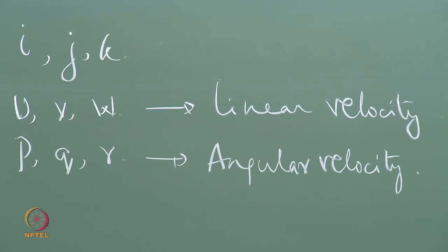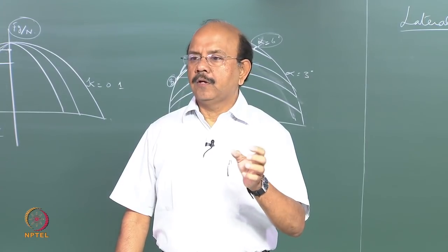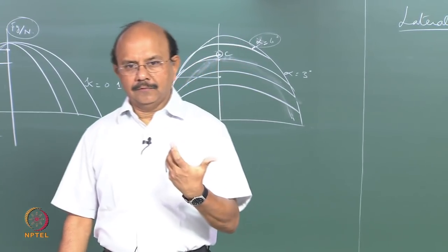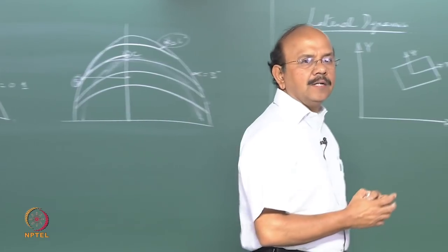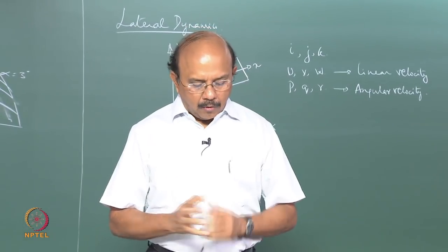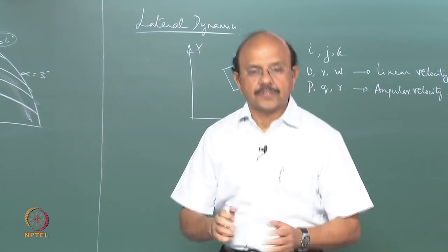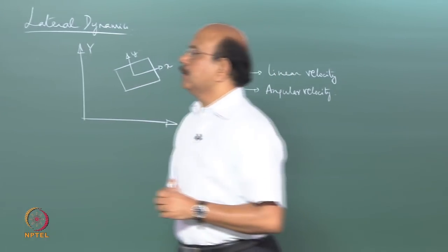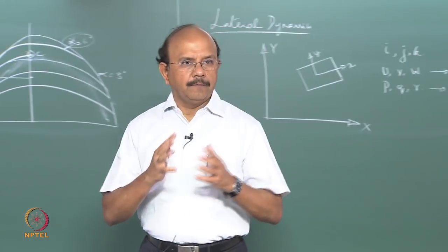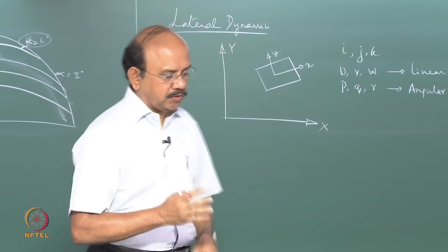The rotation of the vehicle — the angular velocity — is denoted P, Q, and R. In simple terms, P is the roll, Q is the pitch, and R is the yaw of the vehicle. These are what we call the rotational velocities. The peculiarities of dealing with body-centered coordinate systems — and the additional terms that come into the picture — are what we are going to examine next.